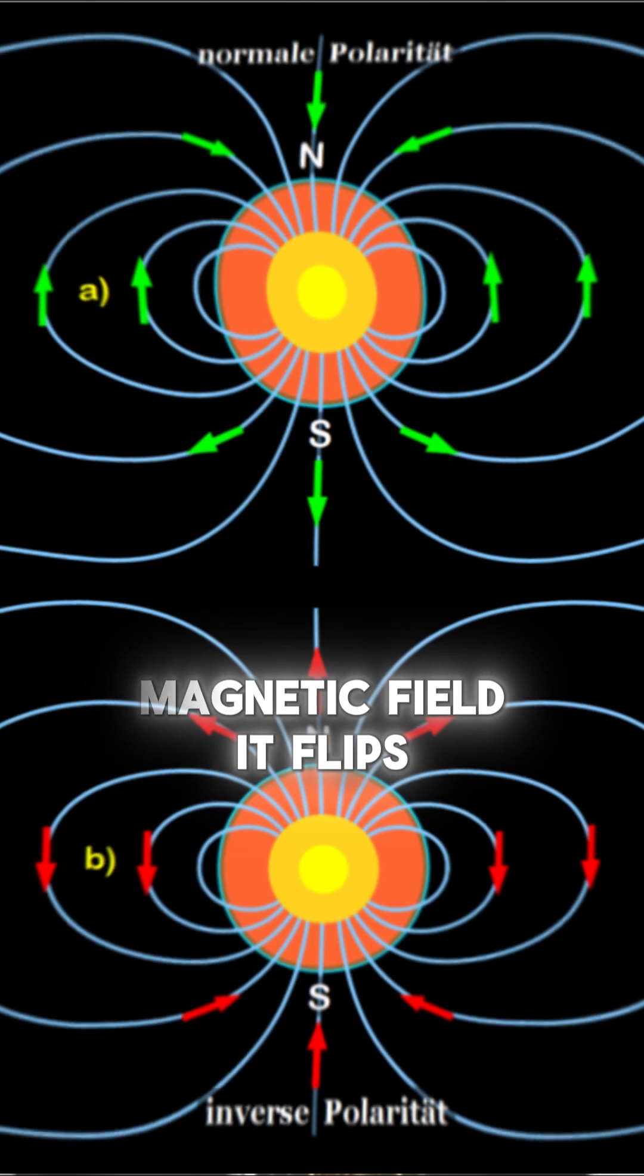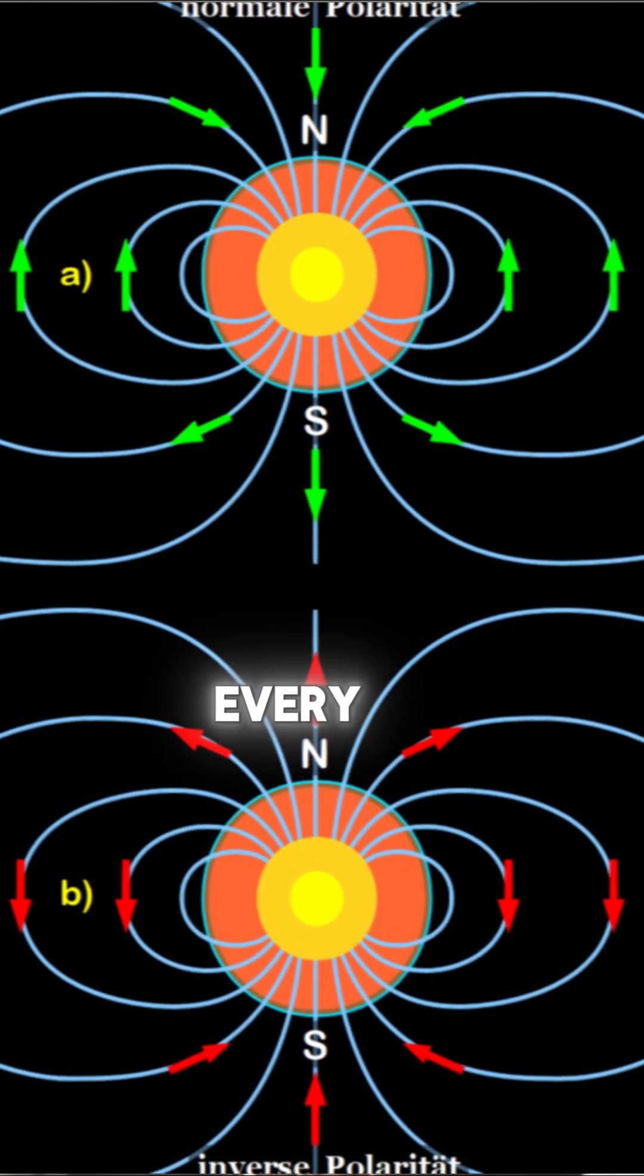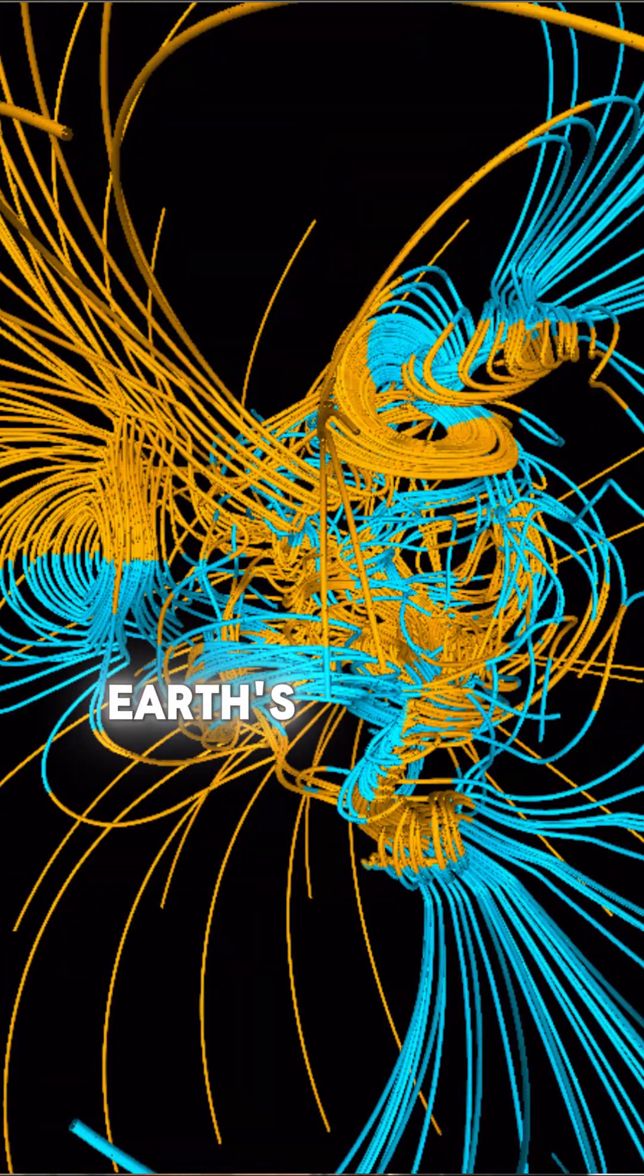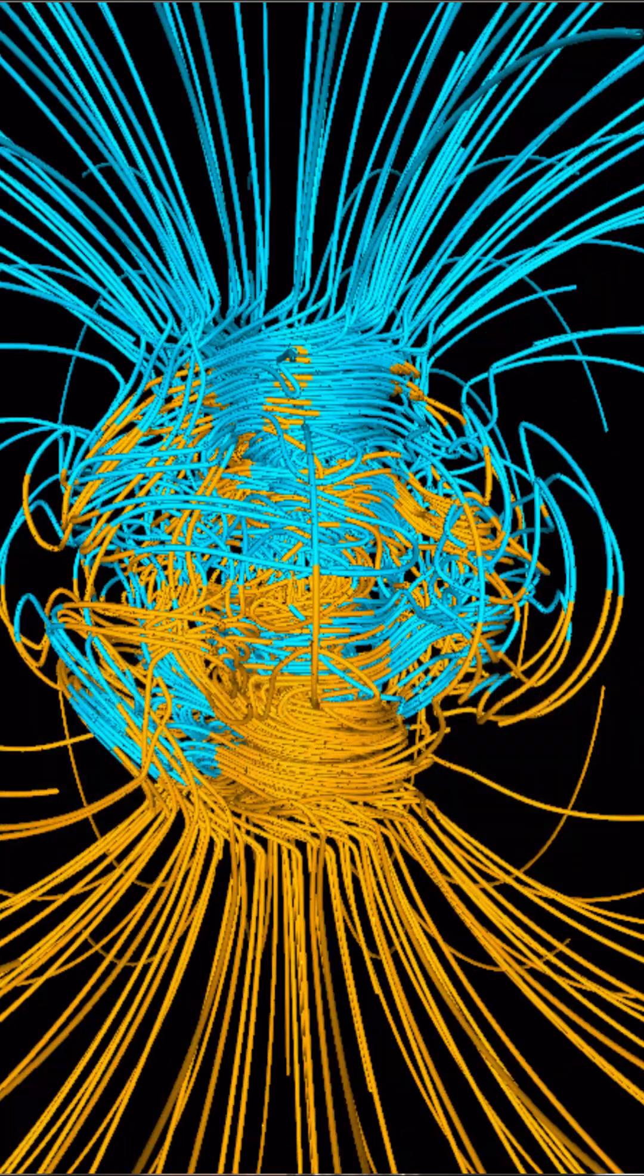But what's interesting about this is it means that the Earth's magnetic field flips every so many tens of thousands of years. On average, around every 26 to 27,000 years, the Earth's magnetic field does a flip.